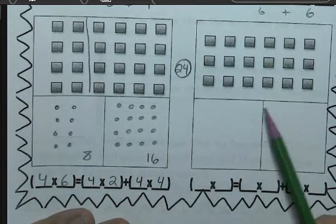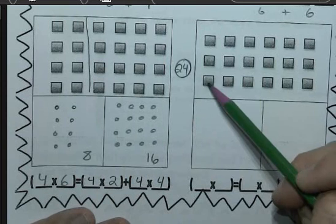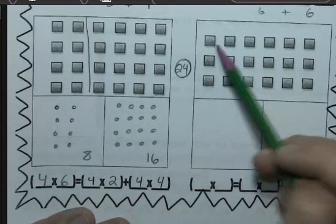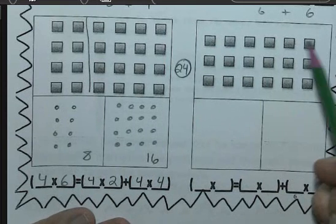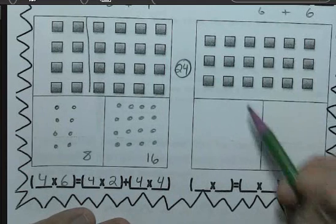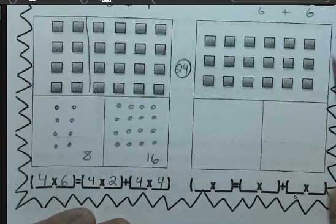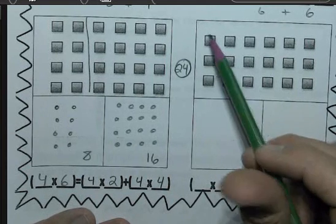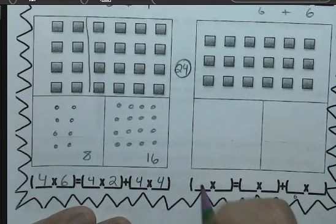Let's look at our second array. So on our original problem we have 3 by 1, 2, 3, 4, 5, 6. So I know the original problem represented by this array is 3 times 6. So I'll write that in my first set of parentheses.